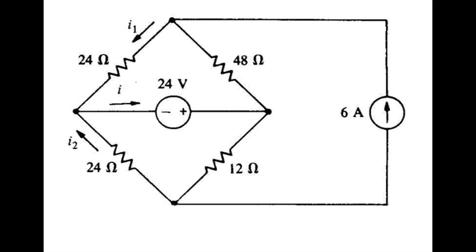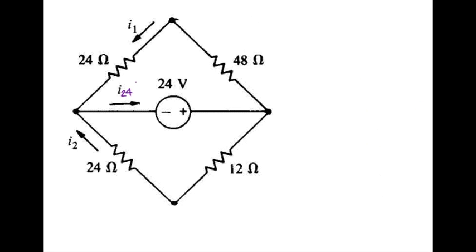Let me begin by finding the current due to the 24-volt source, so we'll set that to zero, take that out altogether, and I'll also put the 24 subscript on those two quantities of interest.